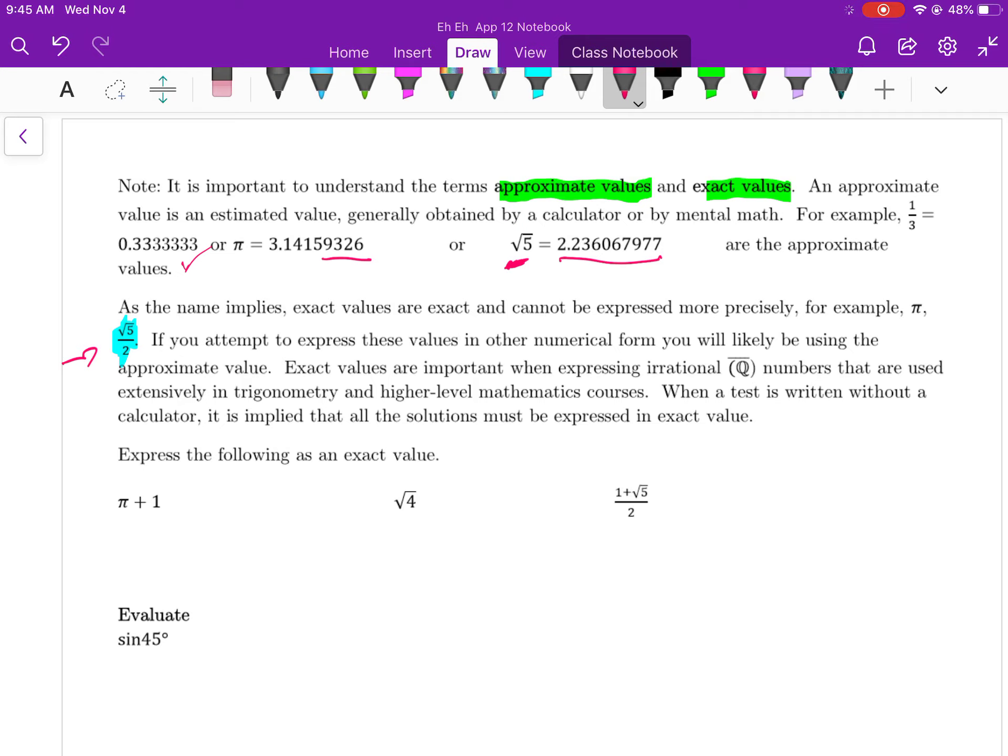As the name implies, exact values are exact and cannot be expressed more precisely. For example, pi is pi. Same with the root of 5 over 2. There is no other way to communicate the idea of the square root of 5 exactly other than just simply putting the root of 5. When a test is written without a calculator, it necessarily implies that all solutions must be written in exact value.